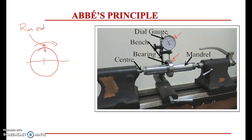We use a dial gauge for measuring this run-out. The bearing is fixed over a mandrel fitted between centers in the setup, and we rotate it by hand. While rotating, the plunger of the dial gauge moves vertically — either upward or downward — and that deflection is shown on the dial. The run-out is perpendicular to the axis of rotation of the workpiece, so the measurement direction should be perfectly perpendicular to that axis.